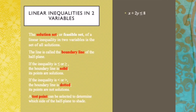When we talk about solution sets, the solution set or feasible set of a linear inequality in two variables is the set of all solutions. The solution set is a half-plane which consists of all points either above, below, to the left, or to the right of your boundary line. The boundary line is the line that divides the whole plane.